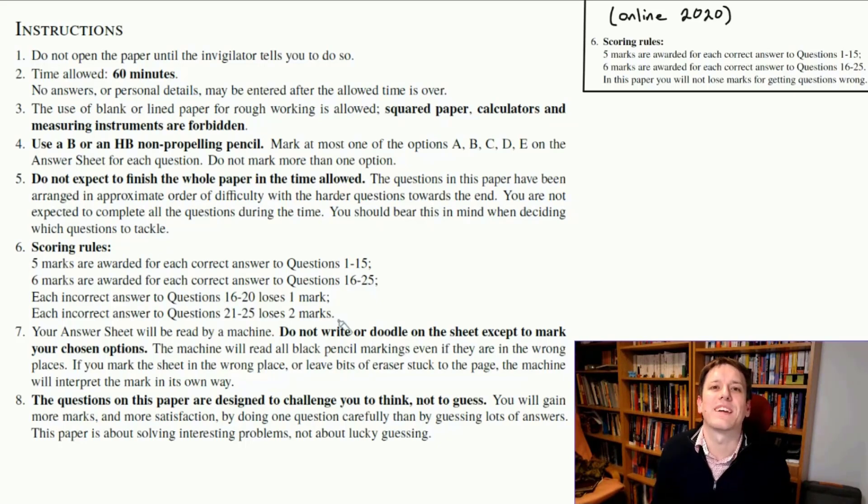Right, the scoring rules. This is where I get so many questions about this challenge, so let's focus on this now. Again, two different systems. Online in 2020 they awarded five marks for each of questions 1 to 15 and six marks for questions 16 to 25, and there were no penalties for wrong answers. So the maximum score here was 5 times 15 plus 6 times 10, that's 75 plus 60 which is 135, the absolute maximum possible score, no penalties.